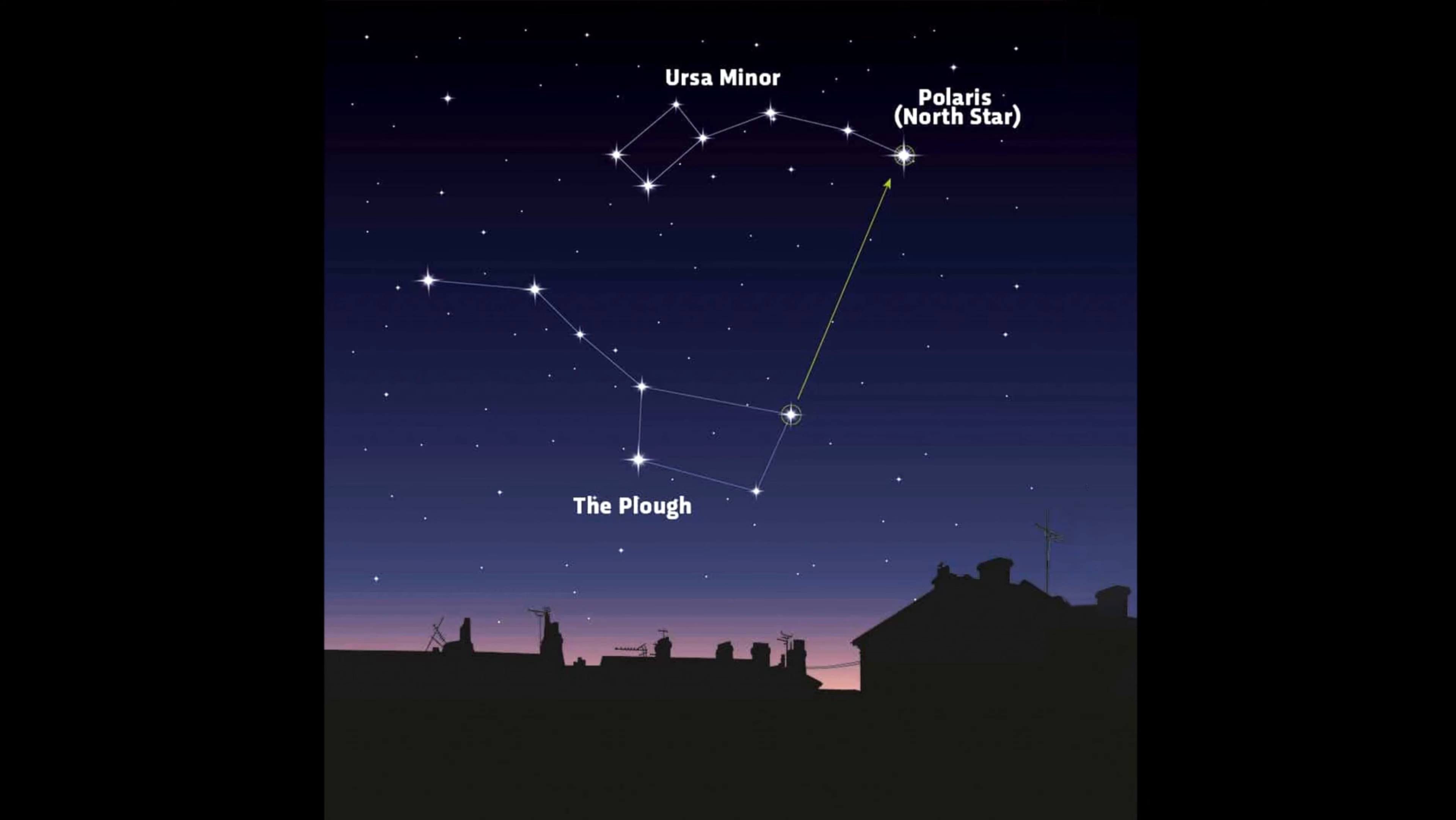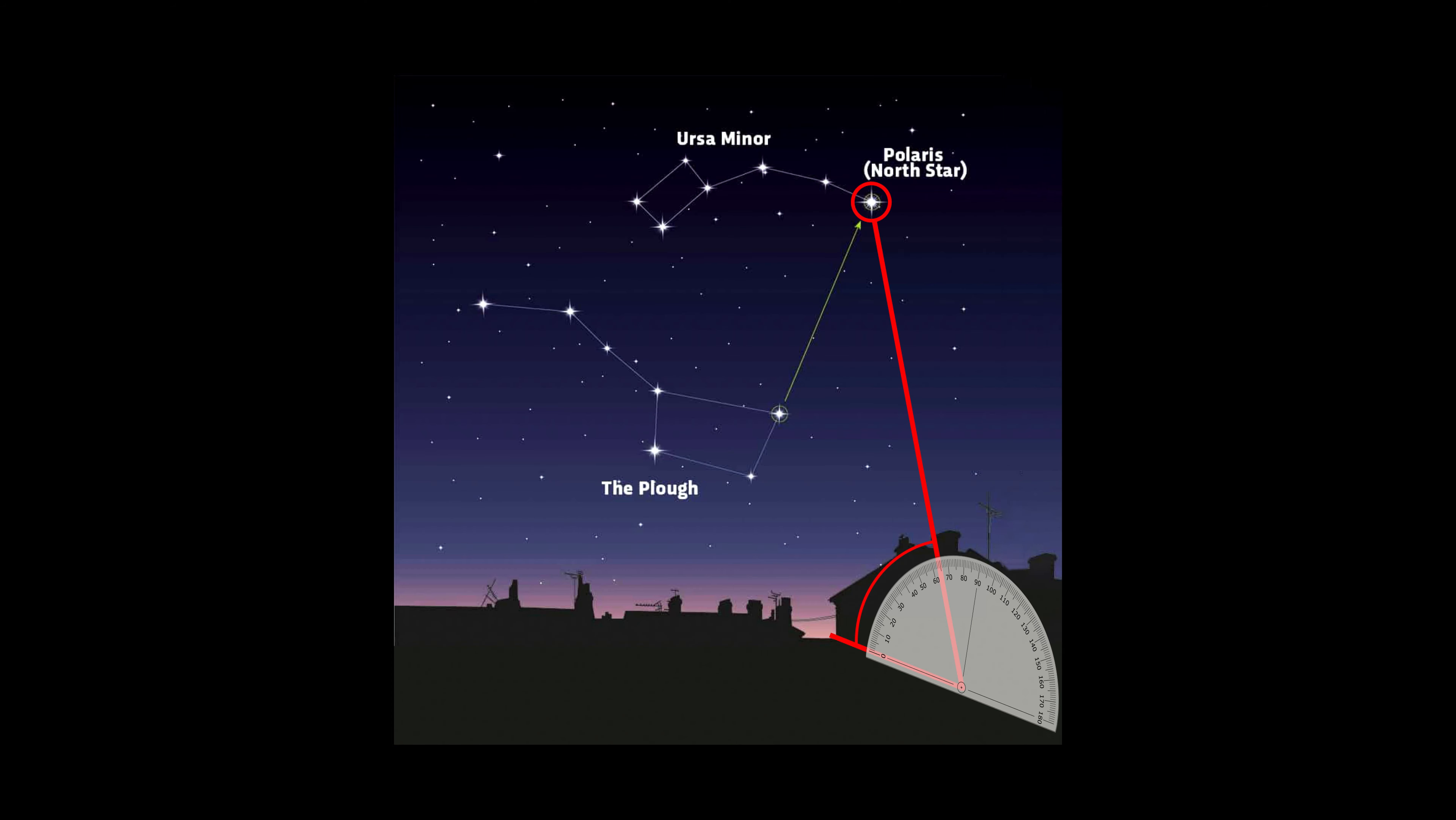Once Polaris is located and you want a compass direction, all you do is project the point straight down to the ground, and you know which direction true north is. Well, at least to 0.7 degrees of accuracy. You can draw a line in the sand from where you are towards the found north direction, and once you know north, the rest of the directions can be derived.